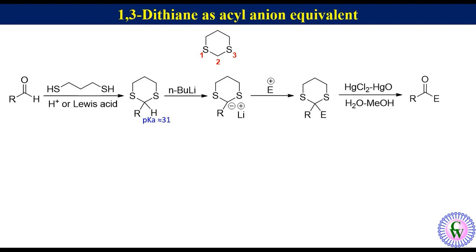If we look at the polarity of the carbonyl carbon in the product, it is positive and normal, and it has been derived from a carbon that had negative polarity. Thus, there is a reversal of polarity of the carbon during the synthesis, and therefore this is an example of umpolung strategy for the synthesis of carbonyl compounds.